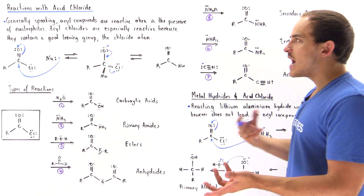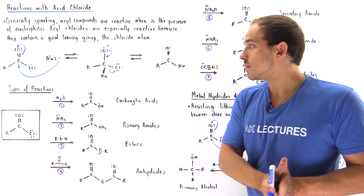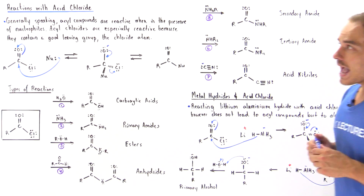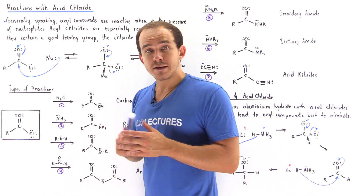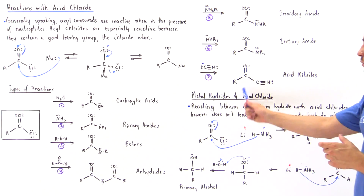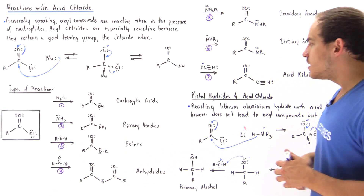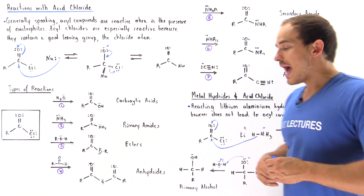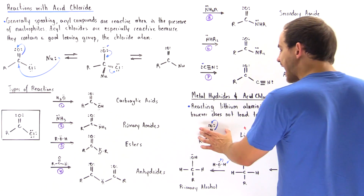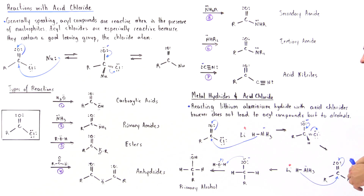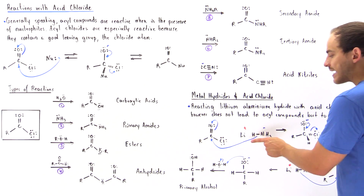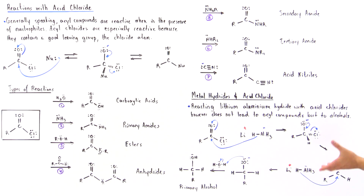We see that many different types of acyl compounds can be formed from acid chloride as the starting material. But what if we take our acid chloride and instead mix it with a very strong nucleophile — the hydride atom? Let's see what happens when we mix acid chloride with a metal hydride, using lithium aluminum hydride as our example. We mix the acid chloride with lithium aluminum hydride, and the hydride acts as the nucleophile, creating a tetrahedral intermediate.